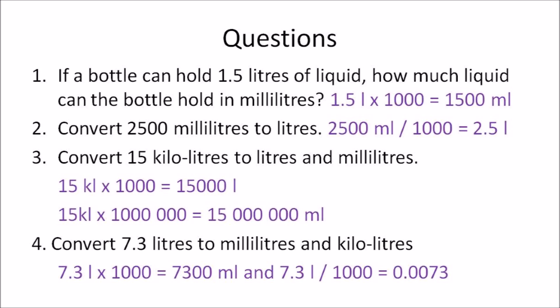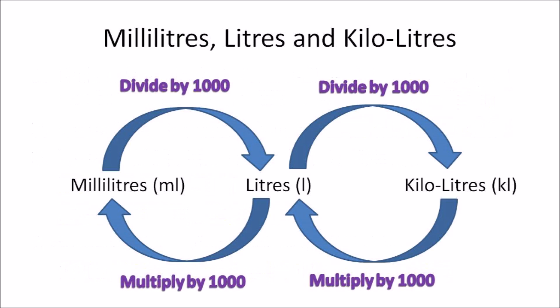For question four, you need to convert liters to milliliters and liters to kiloliters. So 7.3 liters multiplied by 1000 gives you 7300 milliliters, and 7.3 liters divided by 1000 gives you 0.0073 kiloliters. Those are all the questions.